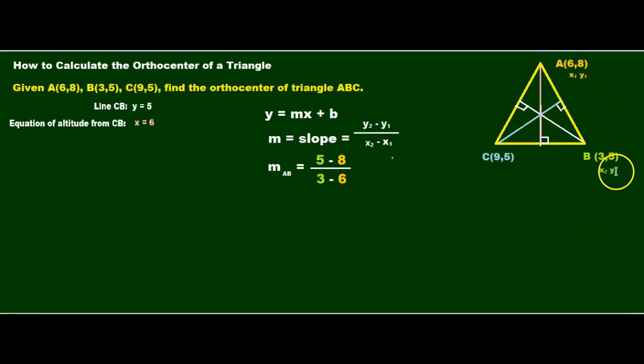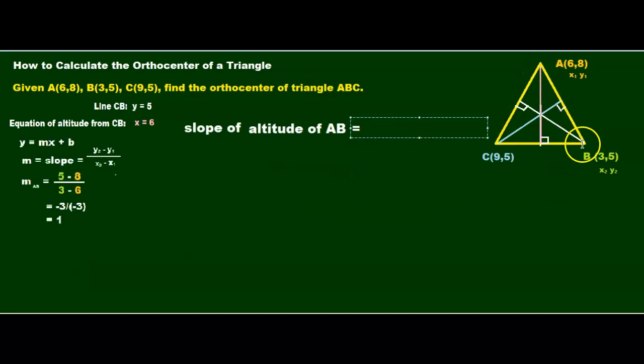I've labeled my coordinates X1, Y1, X2, Y2. So, Y2 is 5 minus Y1 is 8 over X2, which is 3, minus X1, which is 6. And I've color-coded that.